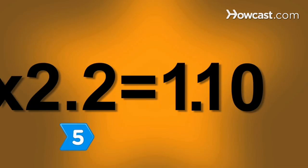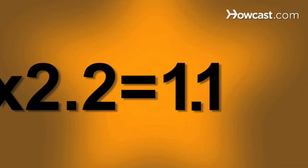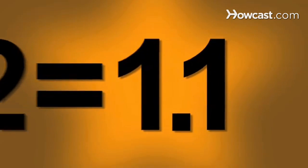Step 5. Eliminate any zeros at the end of the product. 0.5 times 2.2 equals 1.1.